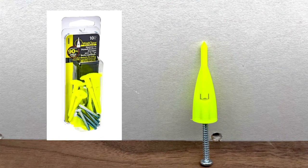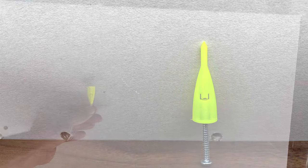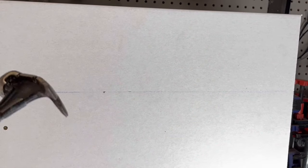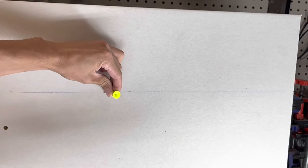First up is the wall claw. It's rated at 90 pounds. This is the only anchor that doesn't require pre-drilling. Simply tapped in using a hammer until it's flush.